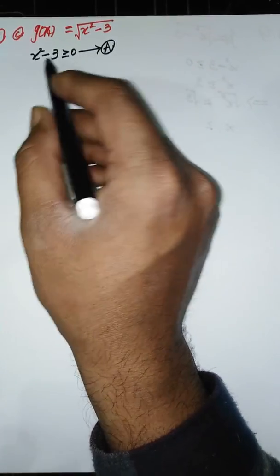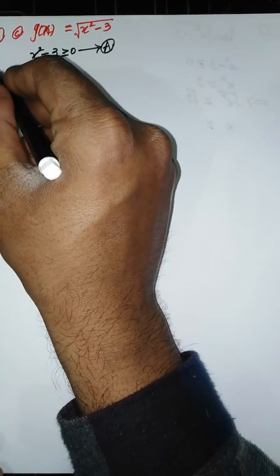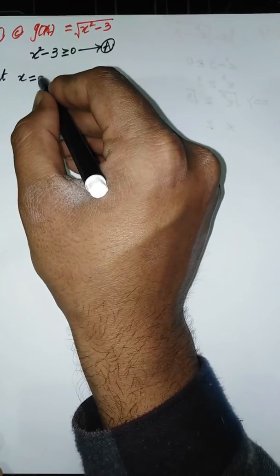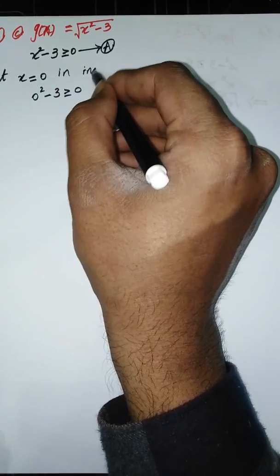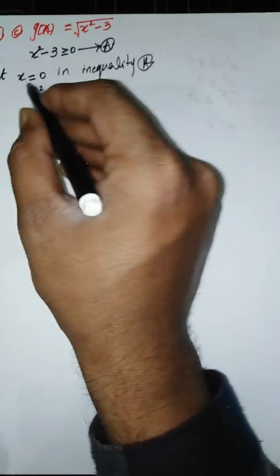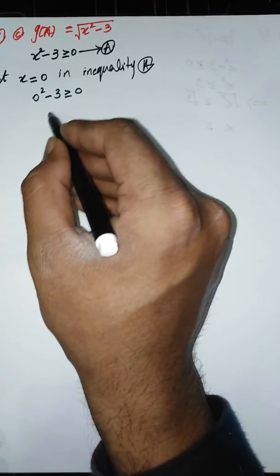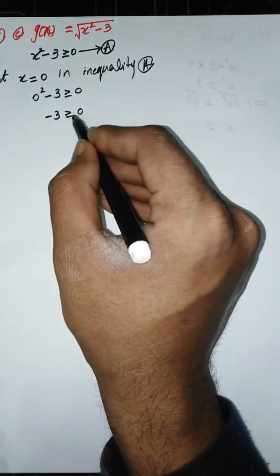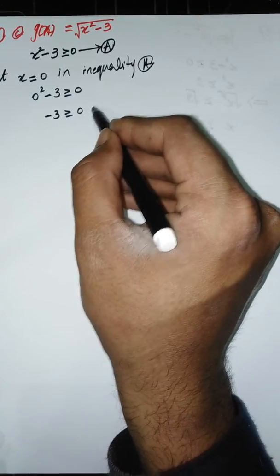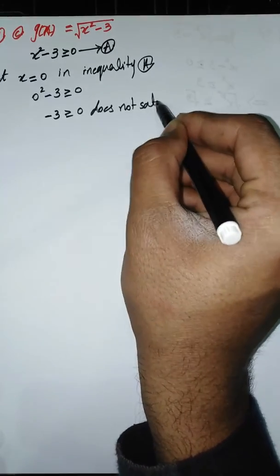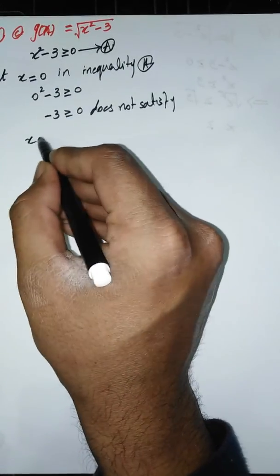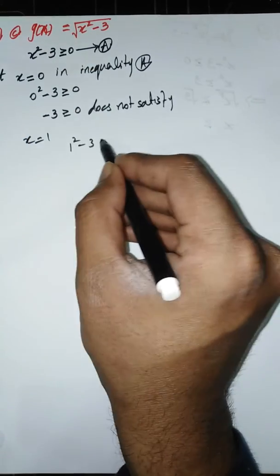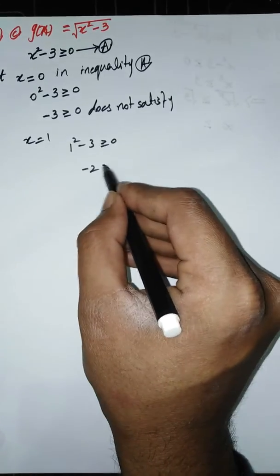Let's check for what values of X this inequality will be satisfied. If we put X equals 0, then 0 squared minus 3 is not greater than or equal to 0, so it does not satisfy. If we put X equals 1, then 1 squared minus 3 is also not satisfied.